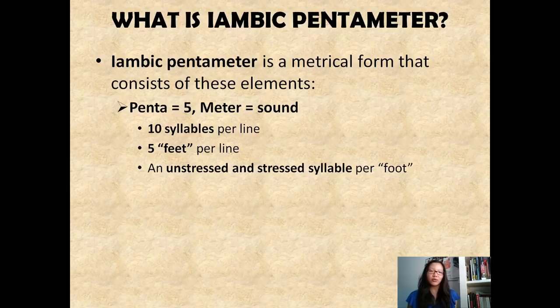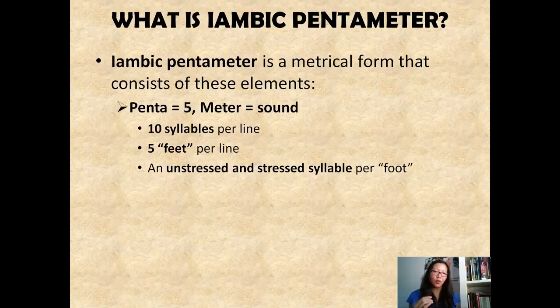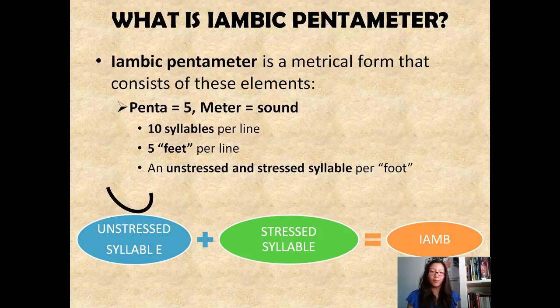There are five feet per line, and an unstressed and stressed syllable per foot. This sounds a little wordy right now, but we're going to work on this together. We have an unstressed syllable, which looks like a curve when scanning a poem, plus a stressed syllable, which together form the iamb — one metrical foot. The iamb is an unstressed syllable followed by a stressed syllable.